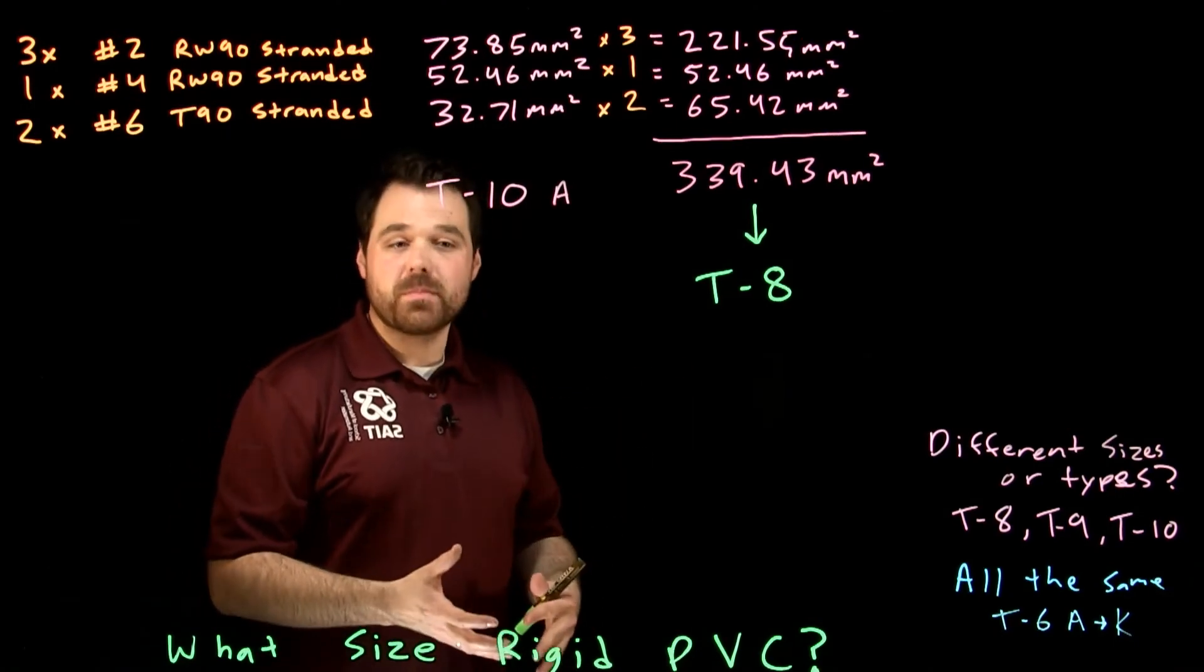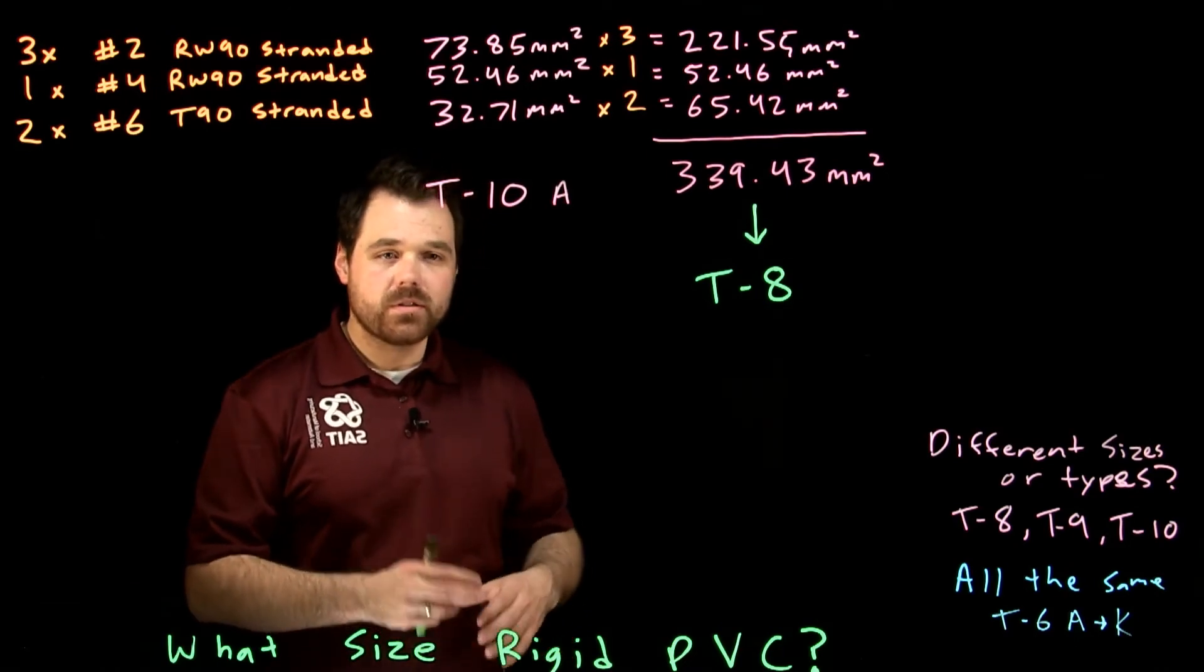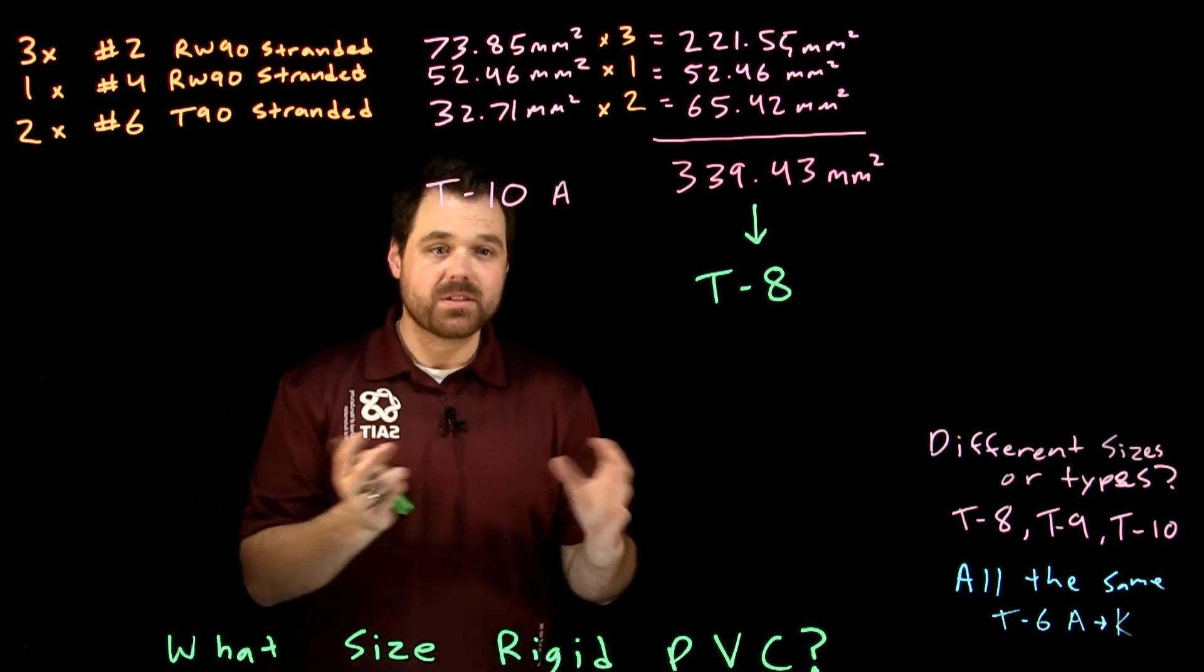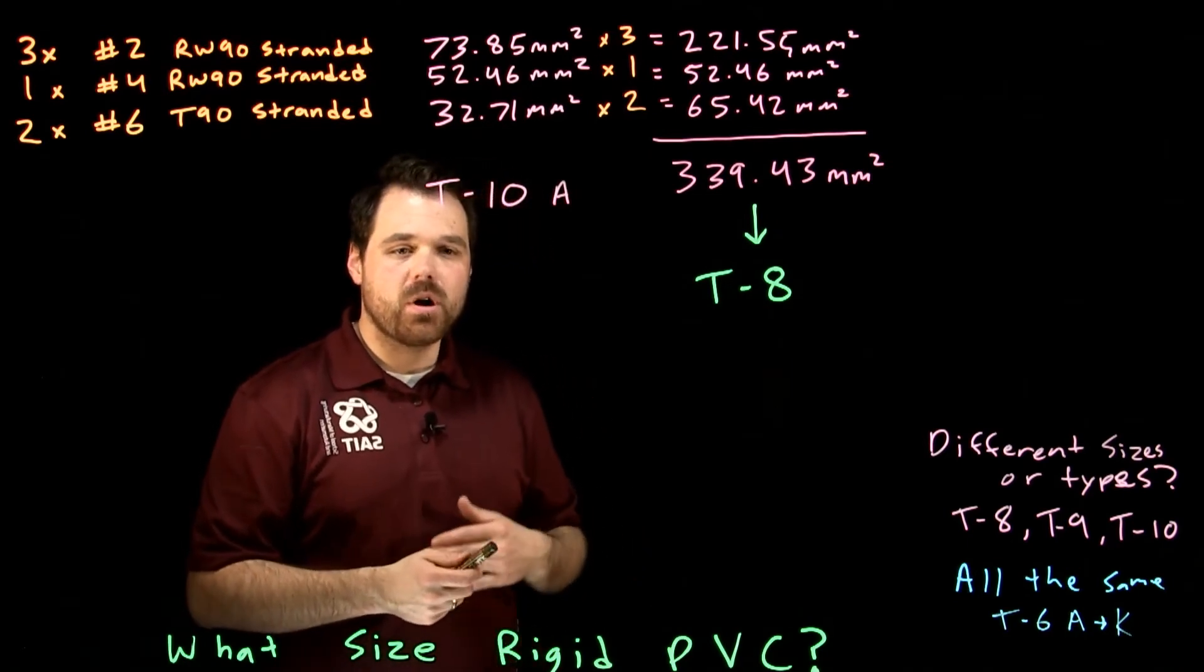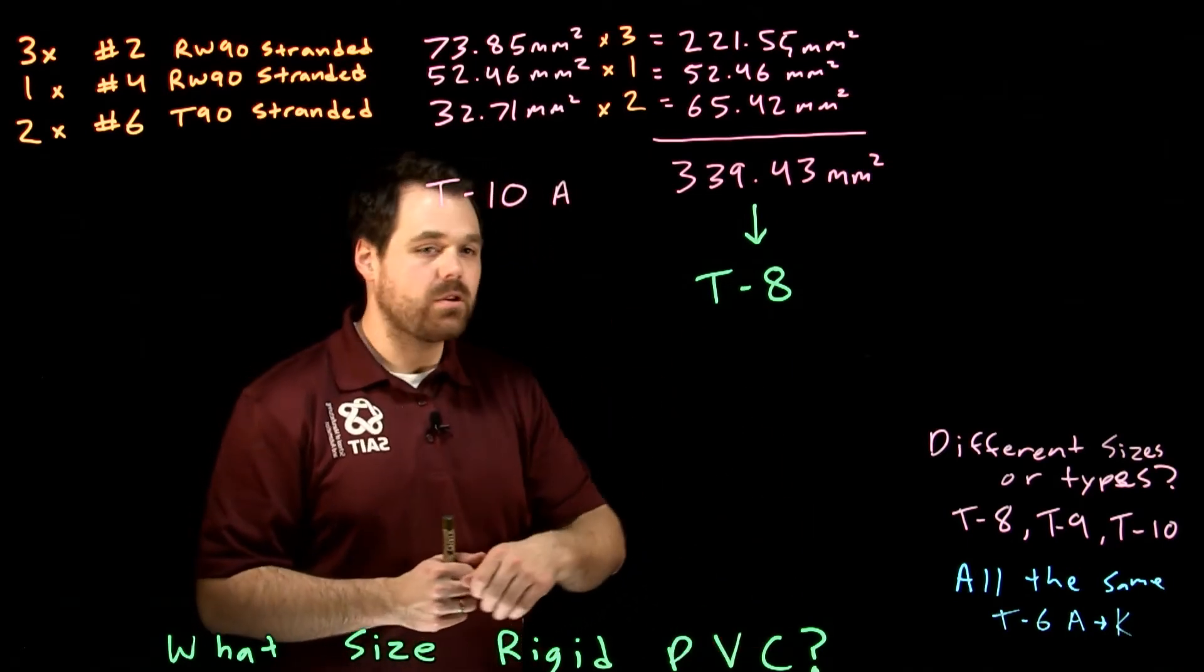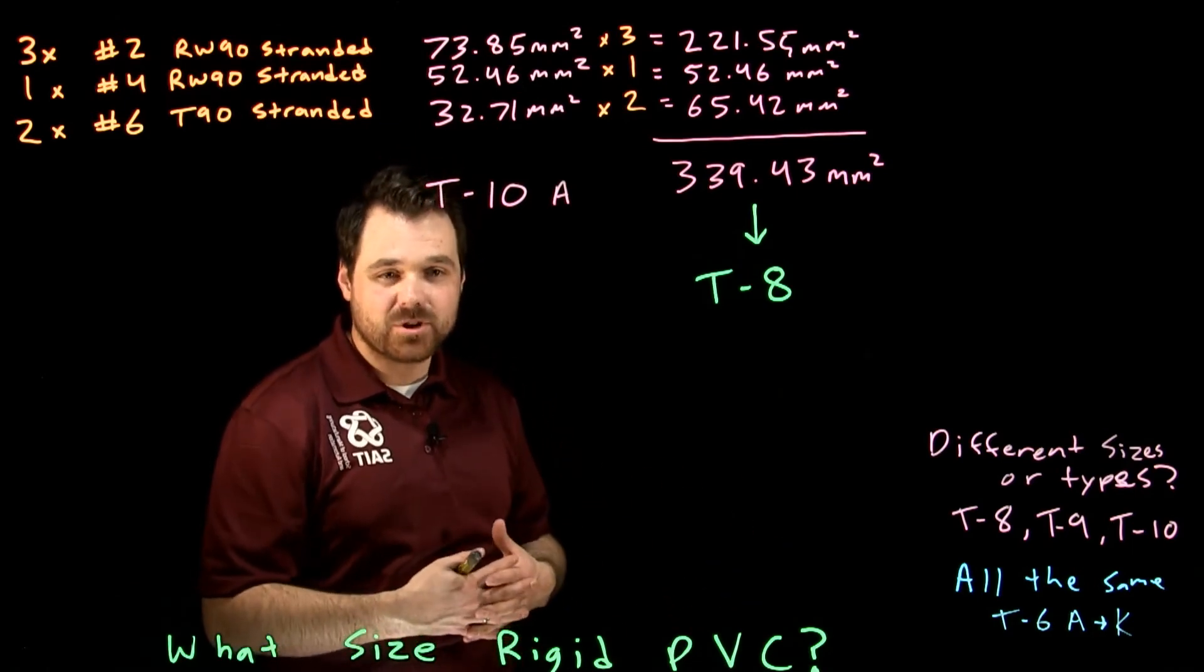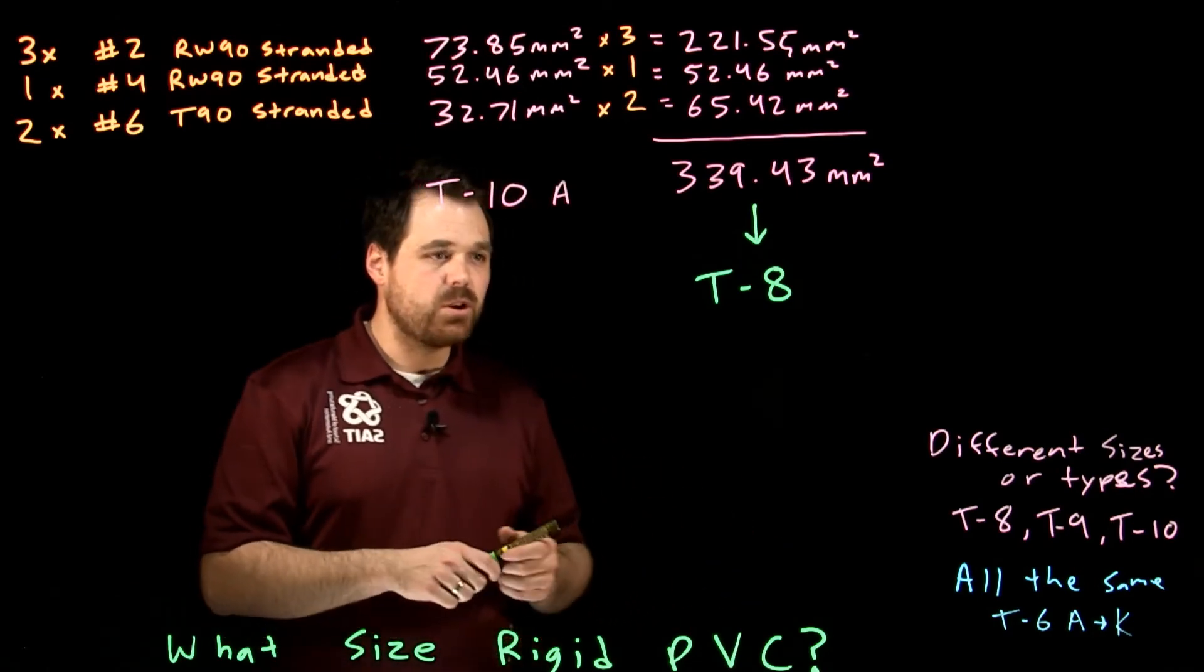The reason we're only allowed to take up forty percent of the conduit is, remember, these are a bunch of circles together inside the conduit. There's going to be little gaps in between them. Also we want it to be safe when you are pulling the conductors through the conduit or if you need to remove a conductor. We need space so we're not causing damage to these conductors.